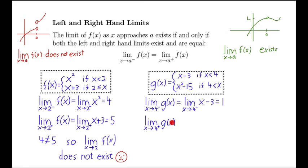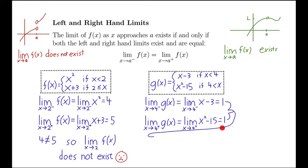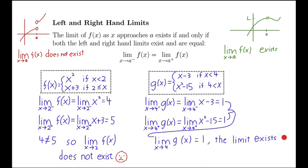Now we take the limit as we come from the right of g of x. Since x is greater than four, we use the x squared minus 15 piece and plug in four: four squared minus 15 is 16 minus 15, which is one. These two ones are the same — the limit from the left and the limit from the right are equal. So the limit of g of x as x approaches four is equal to one, and that means the limit exists.